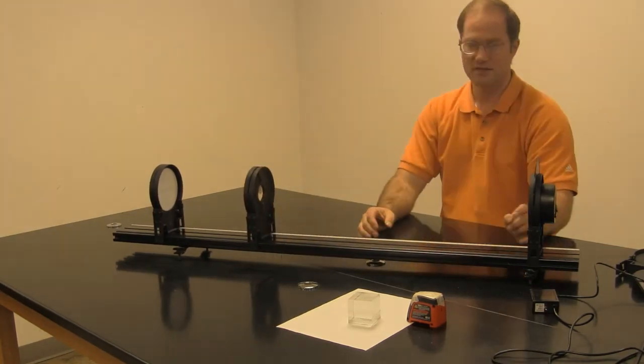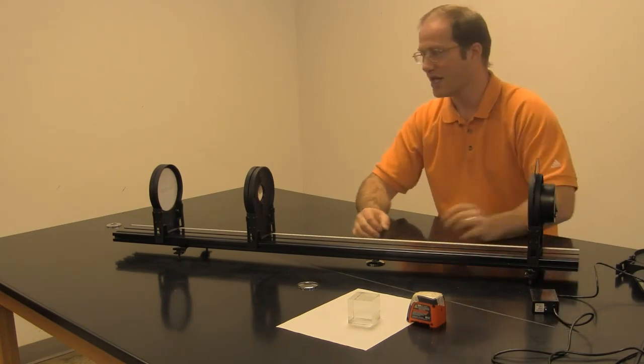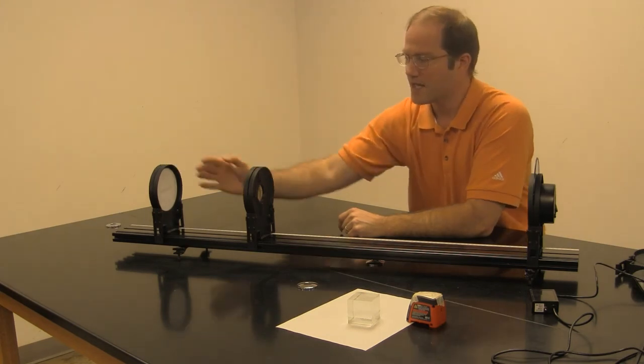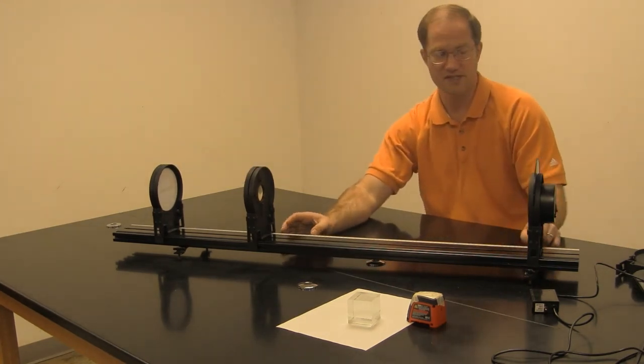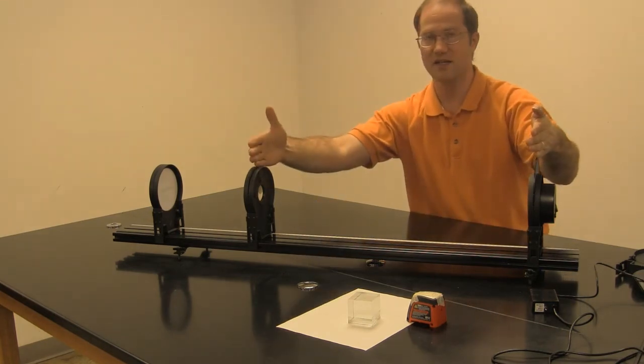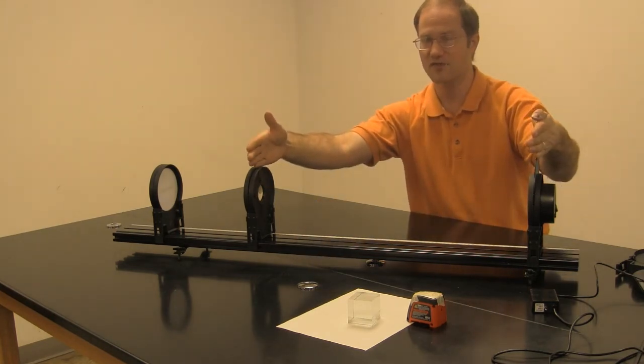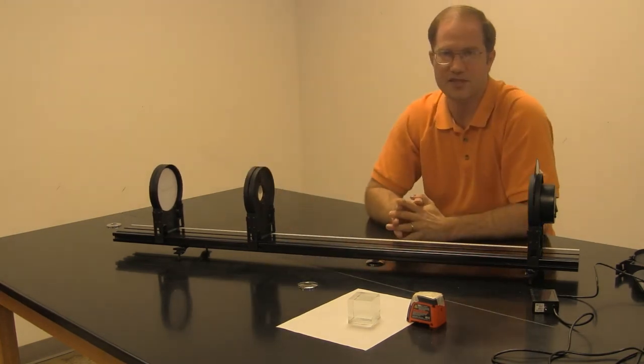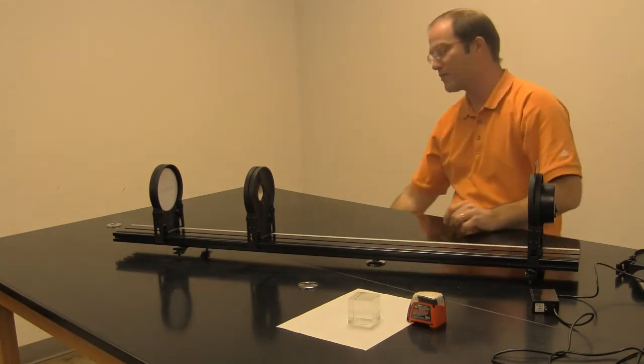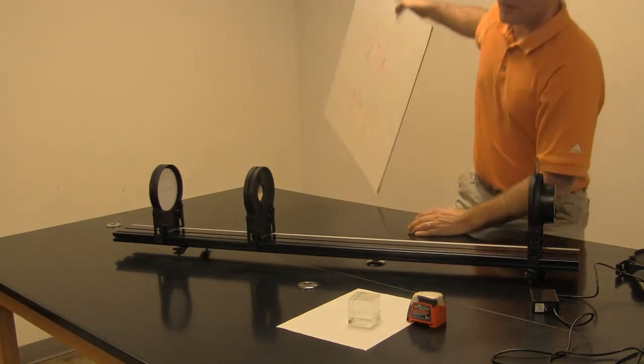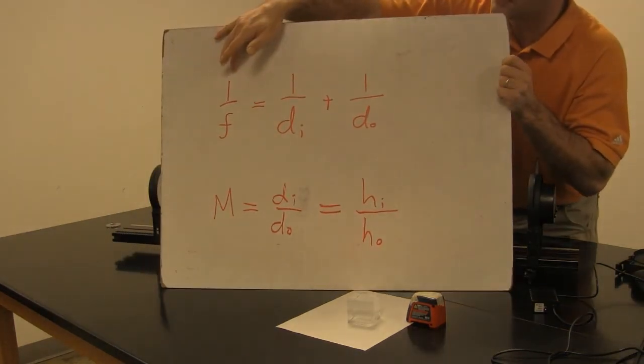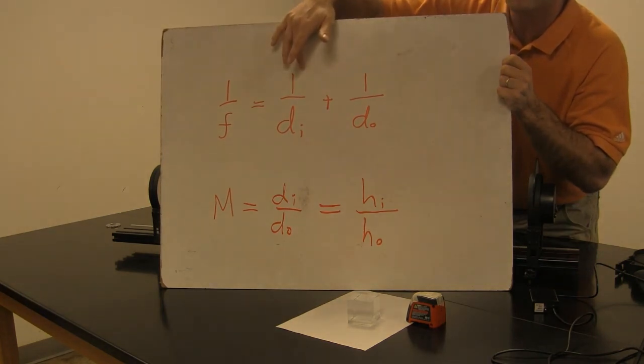Let's define a few more terms. When I place it between the light source, which is the object, and this screen here, which is where the image will be displayed, several measurements become important. This distance between the object and the lens is called the object distance, D subscript O. This distance between the lens and the image is called the image distance, D subscript I. There's a relationship that relates the focal length to these two distances. As you can see here, 1 over the focal length equals 1 over DI, the image distance, plus 1 over DO, the object distance.